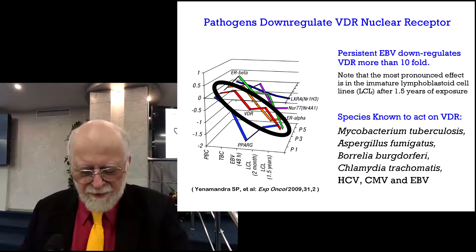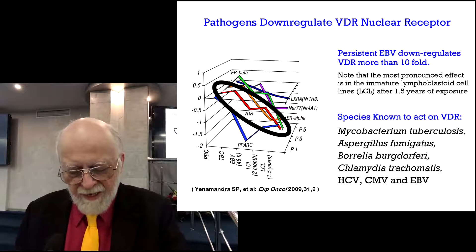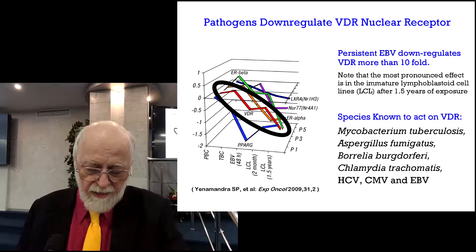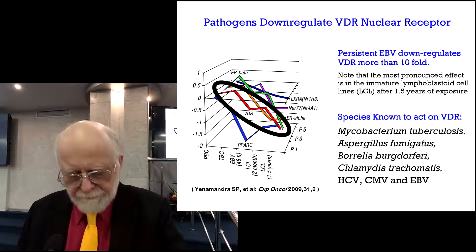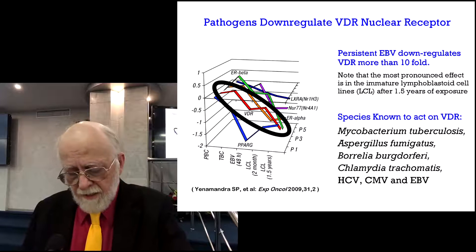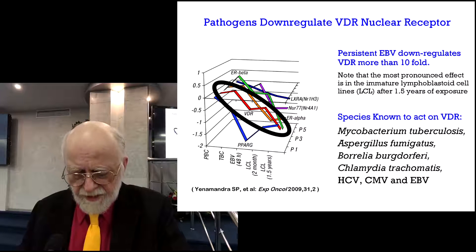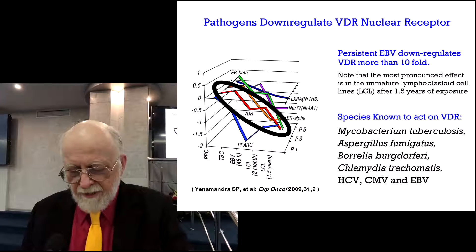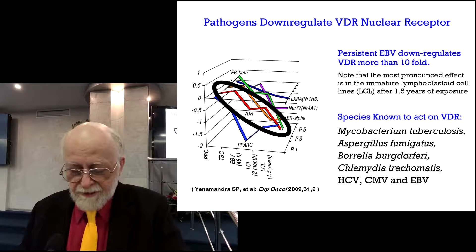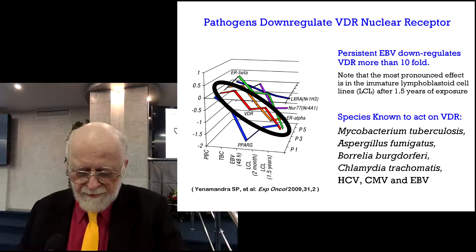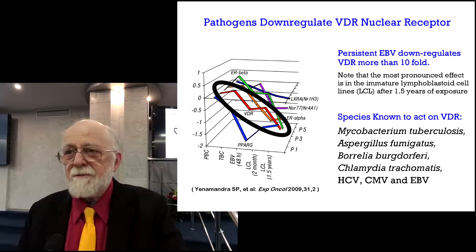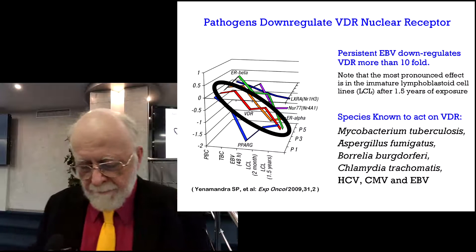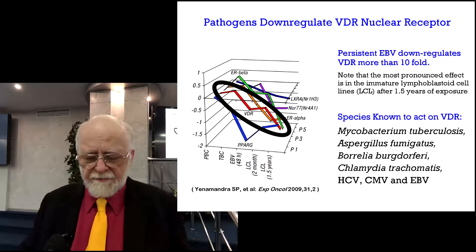This graph shows the downregulation of the VDR by a factor of about tenfold over a period of one and a half years in lymphoblastoid cell lines, which are in the bone where immune cells are initially generated. The species known to knock down VDR expression include EBV, Mycobacterium tuberculosis, Aspergillus, Borrelia, Chlamydia, HIV, CMV — all very nasty bugs. Other species do it as well; we just haven't shown that yet. The VDR is a very important host defence mechanism.